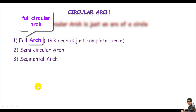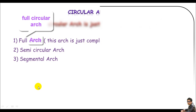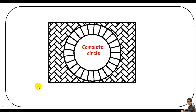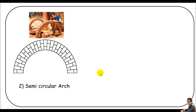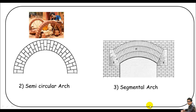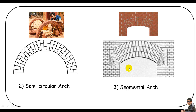Before starting the quantity calculation, I just want to show you how these arches look in real life. The first one is a complete circle — you can call this a complete circular arch. The next one is a half circle, known as the semi-circular arch. And the last one is a segmental arch. These are pictures of these arches so you can recognize them.